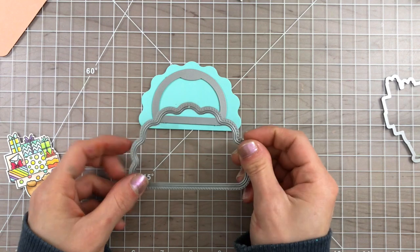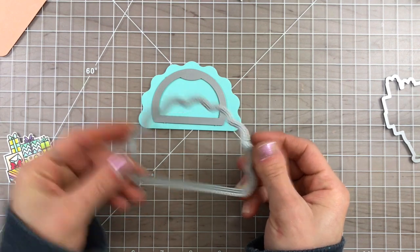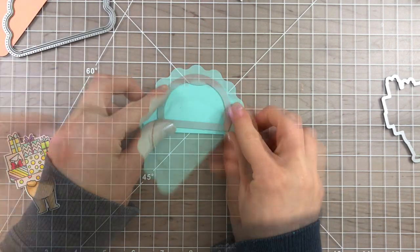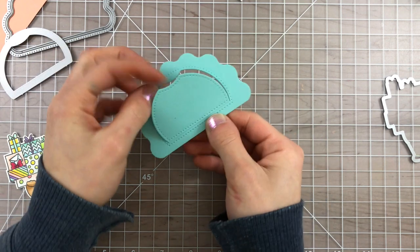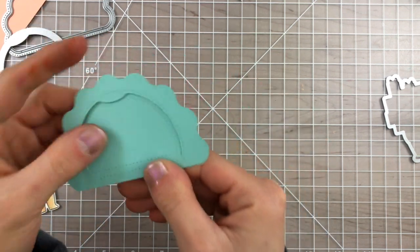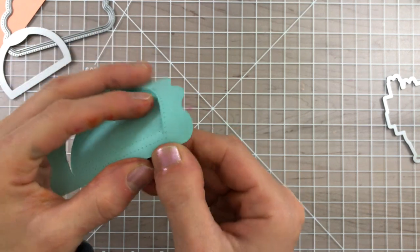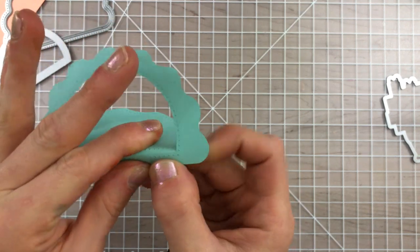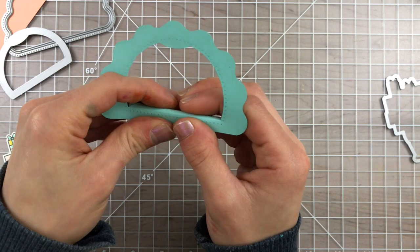Now speaking of dies, there's this really cute scallop window die set from Studio Katia and it's brand new. I'm going to use that to create this little scallop panel and also the cute window that can open up and create a peekaboo window that you can see into another area of the card. I'm going to be using this to create a hidden sentiment.